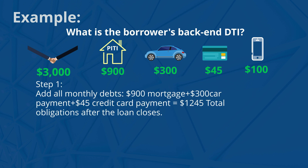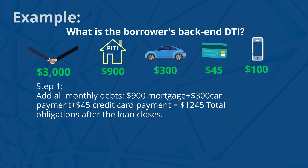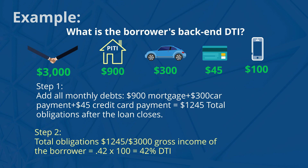Step 1: Add all monthly debts. $900 PITI payment, plus the $300 car payment, plus the $45 credit card payment, equals $1,245 in total obligations after the loan closes. Step 2: Take the total obligations and divide it by the gross income of the borrower. So, $1,245 divided by $3,000, and we get 0.42. Times that by 100, and we get our DTI of 42%.